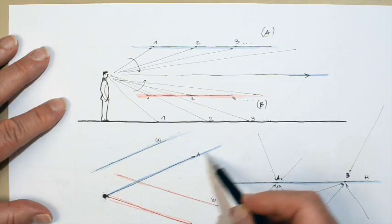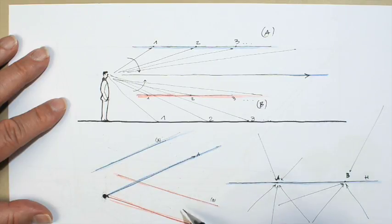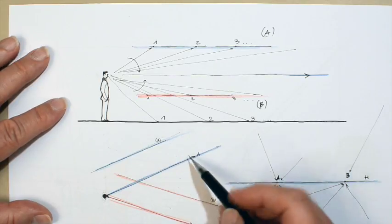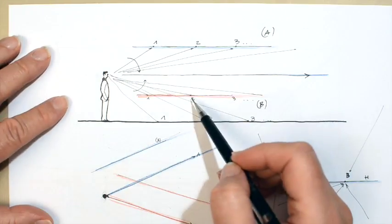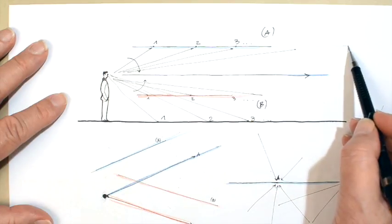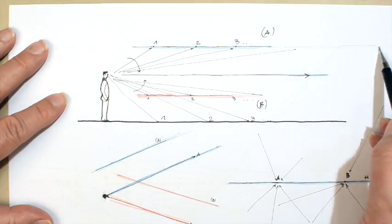On the lower drawing I build the vanishing points of the two directions as indicated previously by passing lines in both directions through the eye. We find a vanishing point A for the blue lines and a vanishing point B for the red lines.